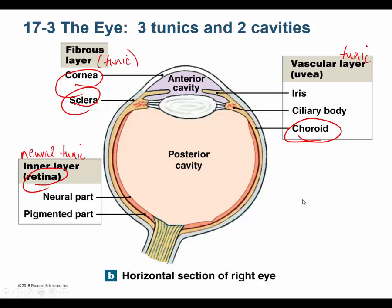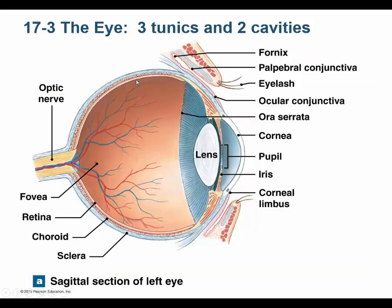The aqueous humor is in the anterior cavity — aqueous means watery. The vitreous humor is gelatinous. Within the anterior cavity there's an anterior compartment between the cornea and the pupil, and a posterior compartment between the pupil and the lens. Now you can see those compartments from the correct angle.